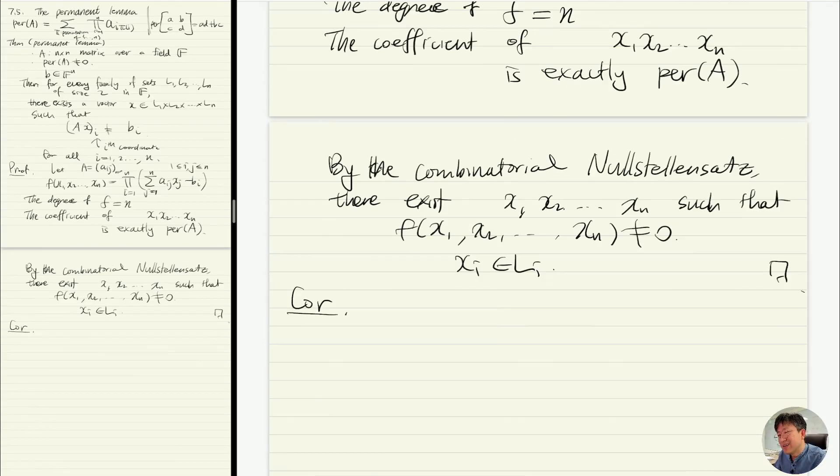This can be seen as a kind of generic tool to show that something exists. As long as we compute the permanent of some matrix and if it's non-zero, then we can always find some assignment where something is non-zero.